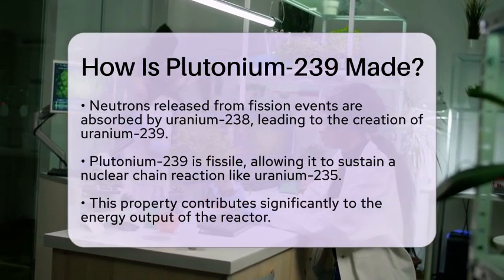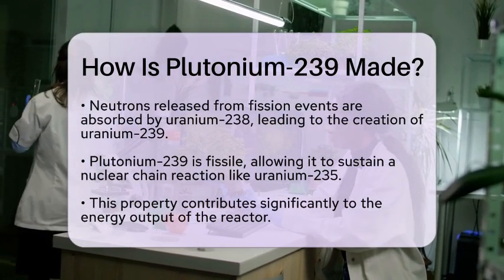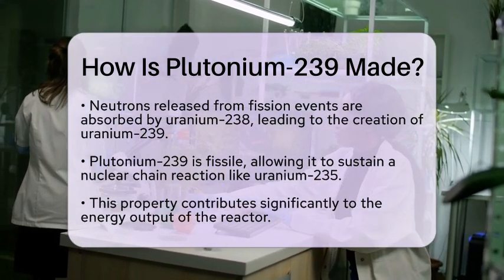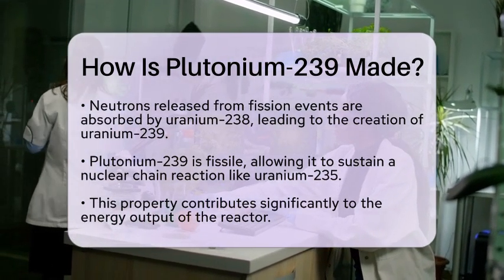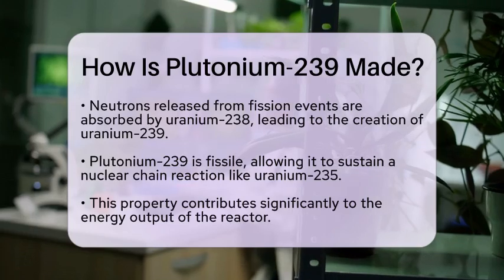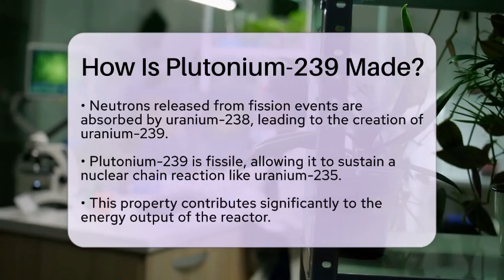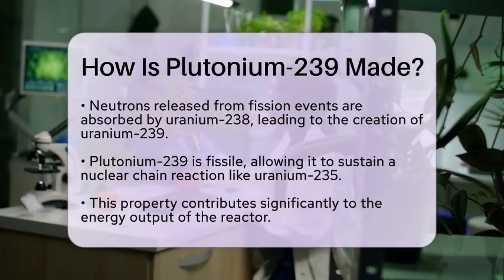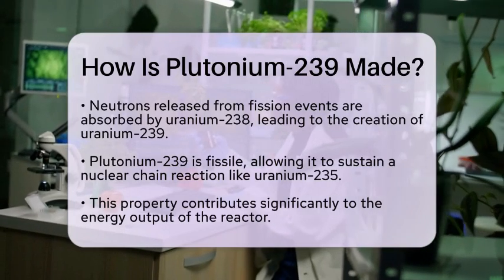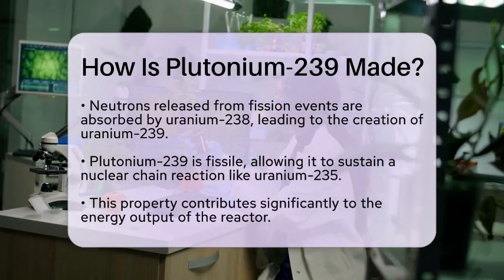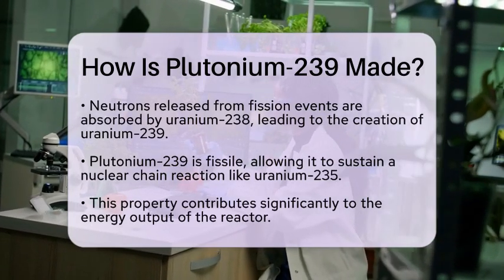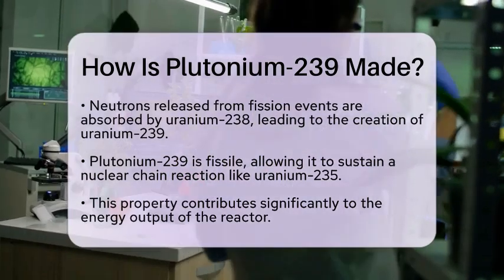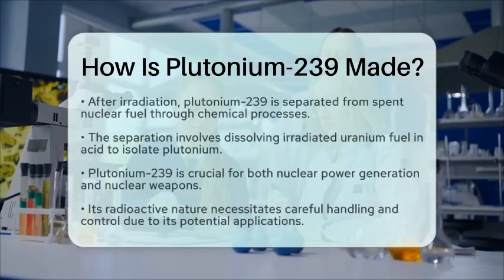After the uranium fuel has been irradiated for several days, the Plutonium-239 can be separated from the spent nuclear fuel. This separation process involves dissolving the irradiated uranium fuel in acid. Then, chemical processes are used to isolate Plutonium from Uranium and other fission products.